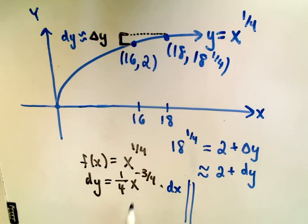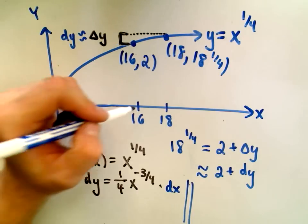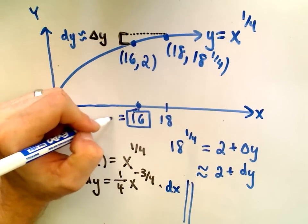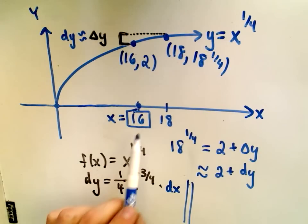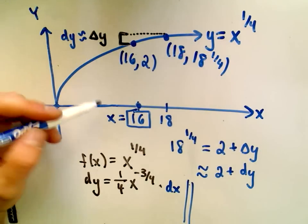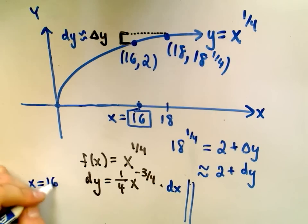The value that you plug in for x, you plug in the value that was easy to evaluate. So it was easy for me to take 16 to the 1/4 power. So that's what I'm going to let x equal. I'm going to let x equal 16.